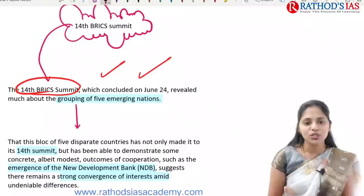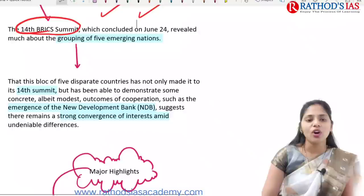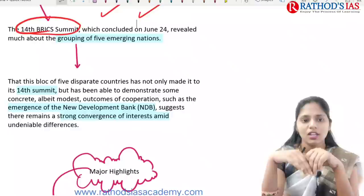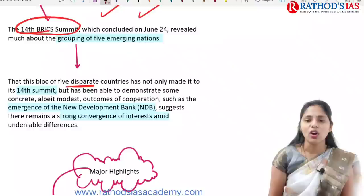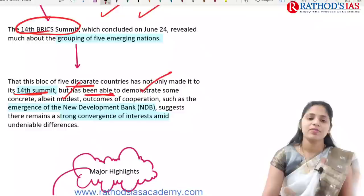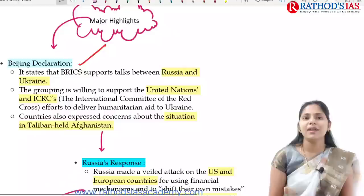The 14th BRICS Summit revealed that the grouping of five emerging nations — Brazil, Russia, India, China, and South Africa — are cooperating with each other. The block of five disparate countries has not only conducted its 14th summit but also demonstrated some concrete, modest outcomes of cooperation, especially in areas like the New Development Bank and COVID-19 vaccines.